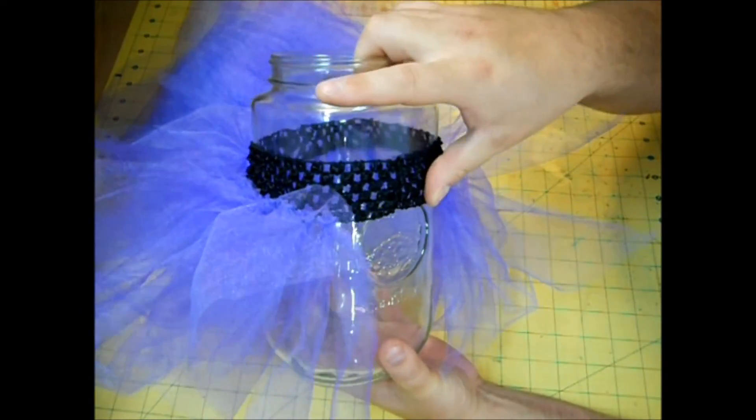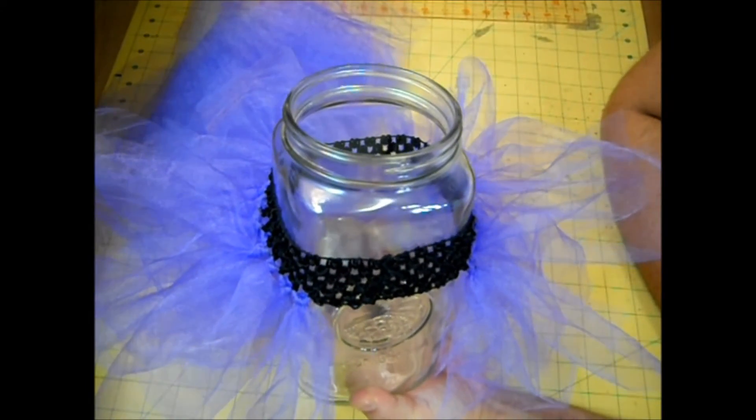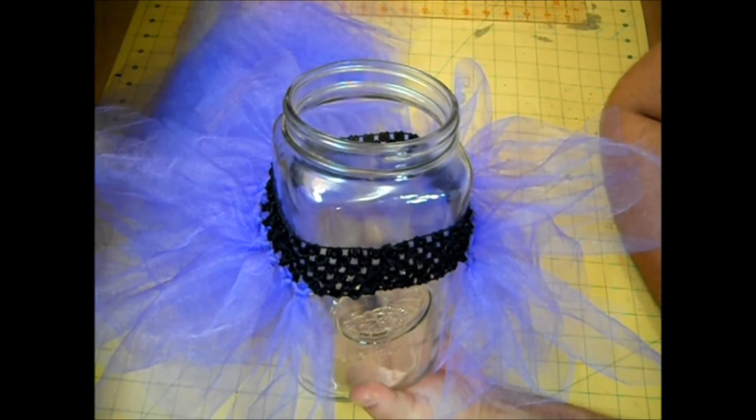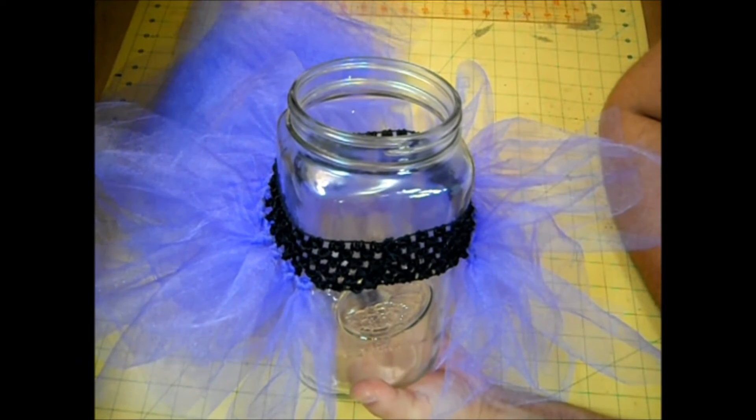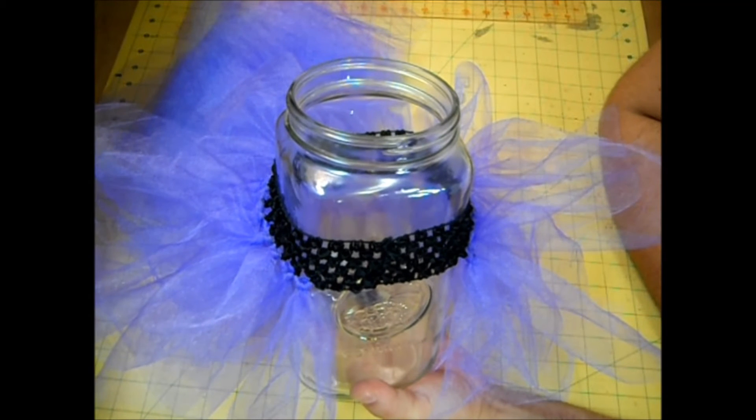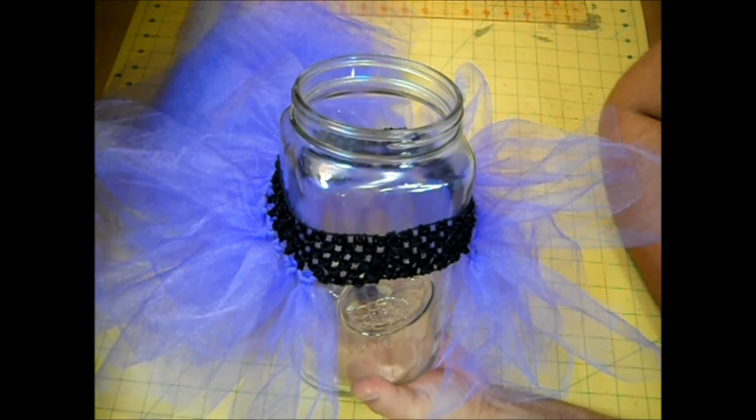We have our first row done. Now you could just stop there, but I want mine a little bit fuller, so I'm going to add a second row. I have seen these done before where people put three rows on, but I think it's a little too much fluff for a pet one. If you're making these for a child, I would go ahead and put three rows on.